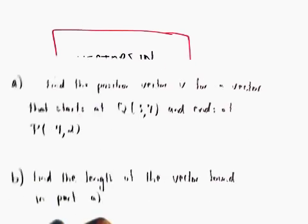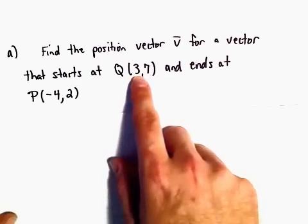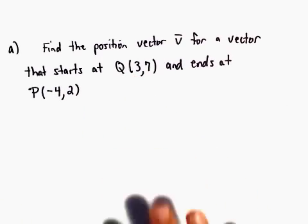All right, in this example, we're going to find a position vector for a vector that starts at the point 3,7 and ends at negative 4, 2.